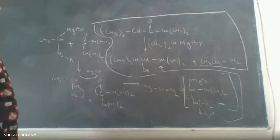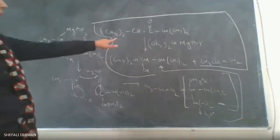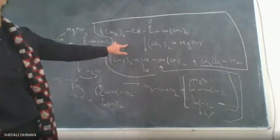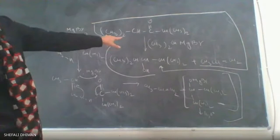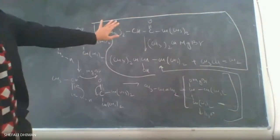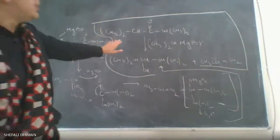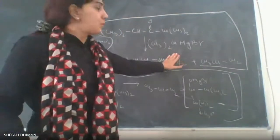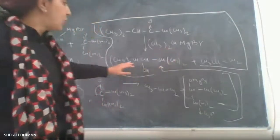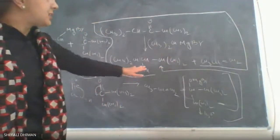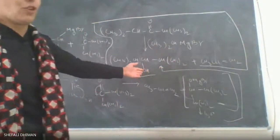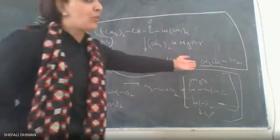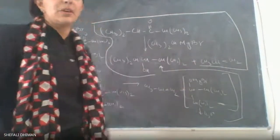When the Grignard reagent undergoes reaction with isopropyl ketone — where the Grignard also contains a bulky group — you find an unusual product being formed: a hydroxy compound along with an alkene. This is very unusual behavior for a Grignard reaction.